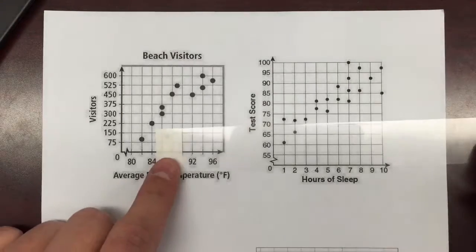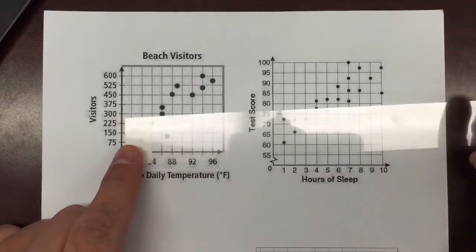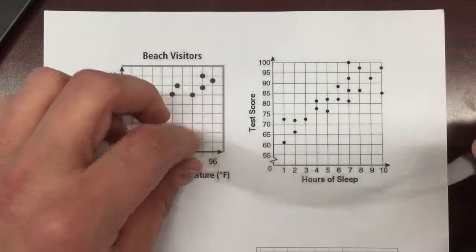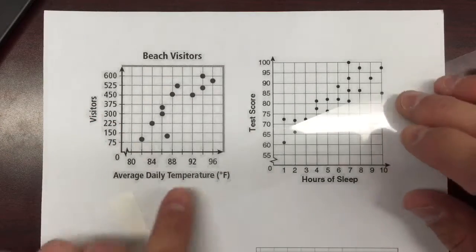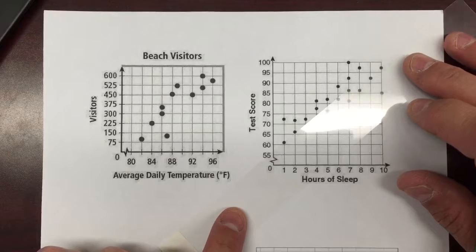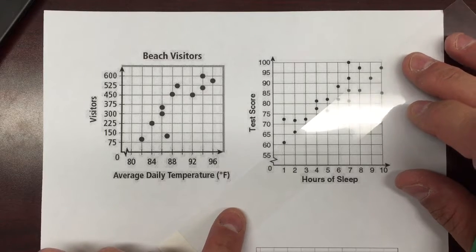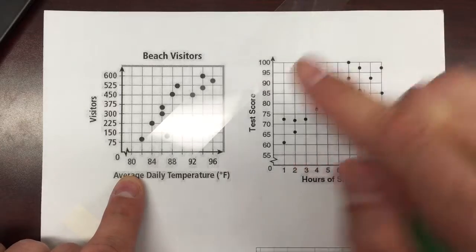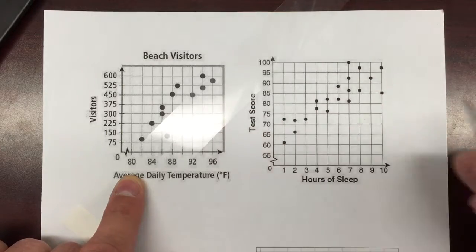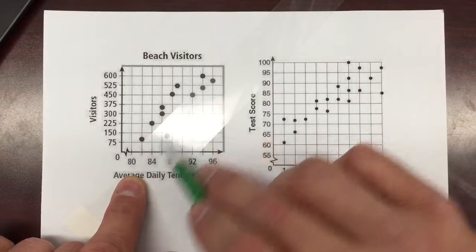In class, you might remember me talking about these pieces of plastic that we're going to use. I'm going to use these on the test if you want and even on review activities in class to draw the line of best fit. And the reasoning behind that is it's easier to see the points on both sides of the line.